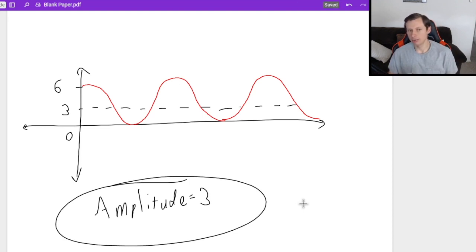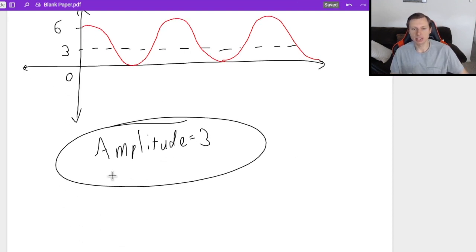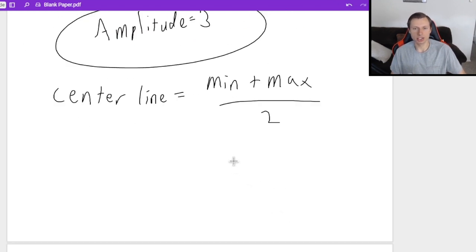So always find the center line first. An easy way to find the center line, the center line is always going to be at your minimum plus your maximum divided by two.